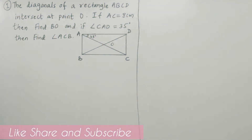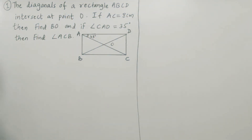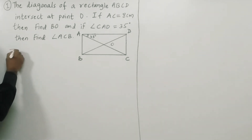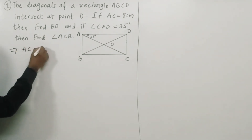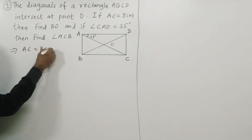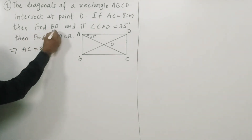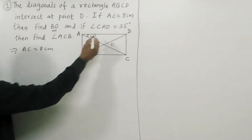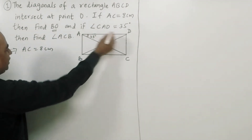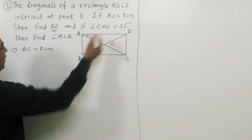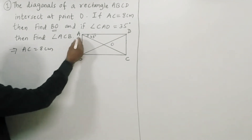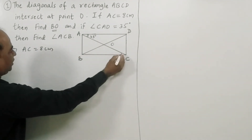First example: diagonals of rectangle ABCD intersect at O. AC is equal to 8cm. Find DO if angle CAD is 35 degrees. Find angle ACD.